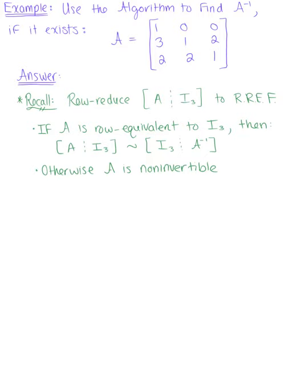We want to row reduce the augmented matrix — A augmented with the 3 by 3 identity matrix — to its row reduced echelon form. If A is row equivalent to the 3 by 3 identity, then this augmented matrix will produce the inverse. Otherwise, A is non-invertible.